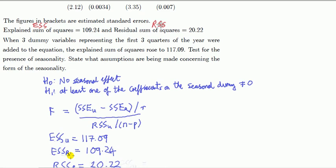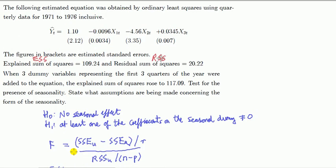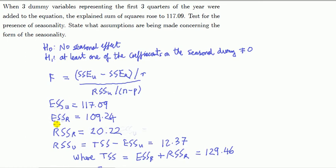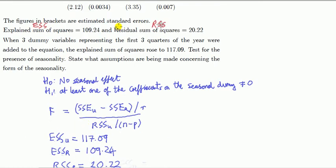Explained sum of squares from the restricted model is given here in the output. Residual sum of squares from the restricted model was also given, right here.